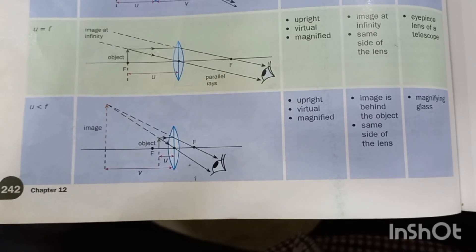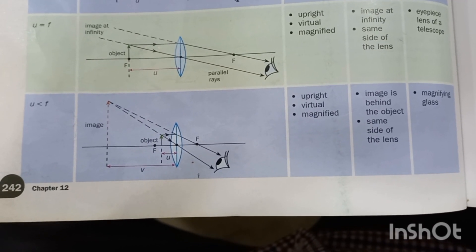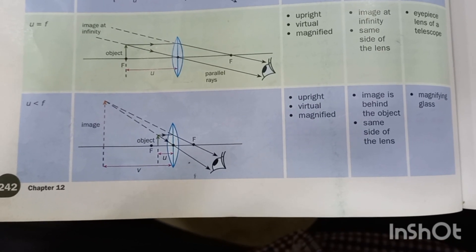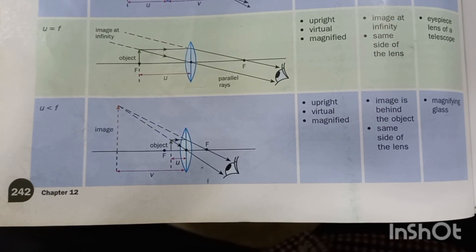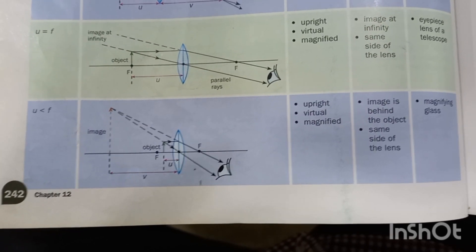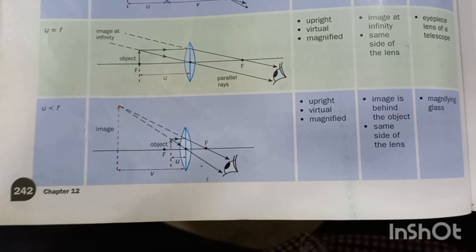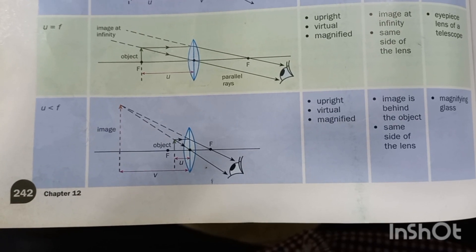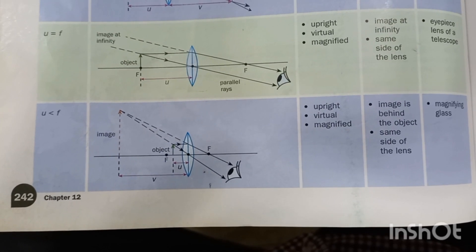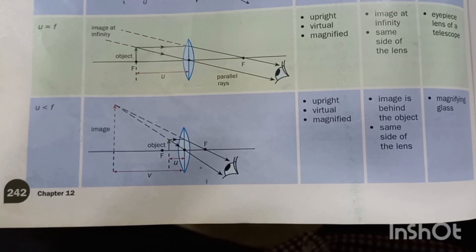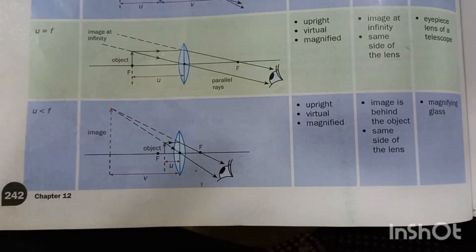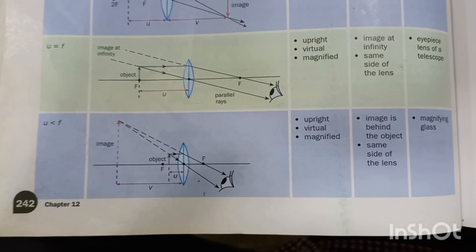In the final ray diagram, the object is placed inside the focal length of the convex lens. When an object is inside the focal length, the image formed is virtual — it cannot be captured on a screen. The image is also magnified and upright. This is the principle used in a magnifying glass.